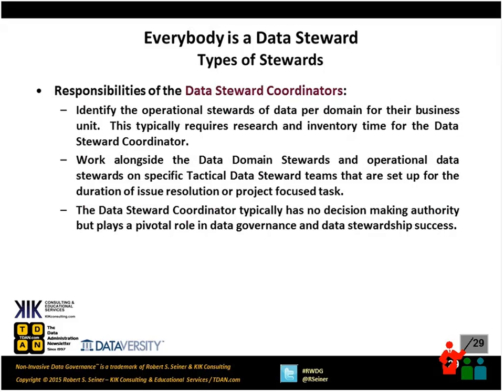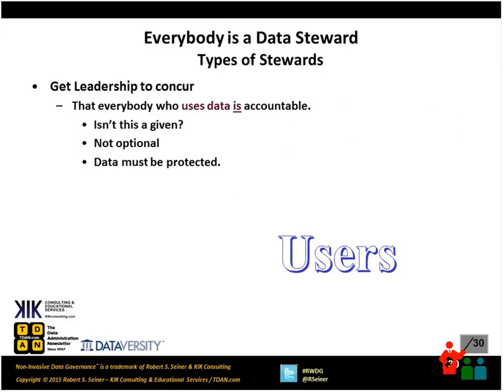Data steward coordinators can help us to identify the stewards. They work alongside the domain stewards. They typically don't have a whole lot of decision-making authority, but they play a central role in making certain we're coordinating the data stewards. A data steward coordinator coordinates the activities of the data stewards. If you subscribe to this idea that everybody in the organization is a data steward, what are some of the steps we can take to deal with this new idea that everybody in the organization has some level of accountability?